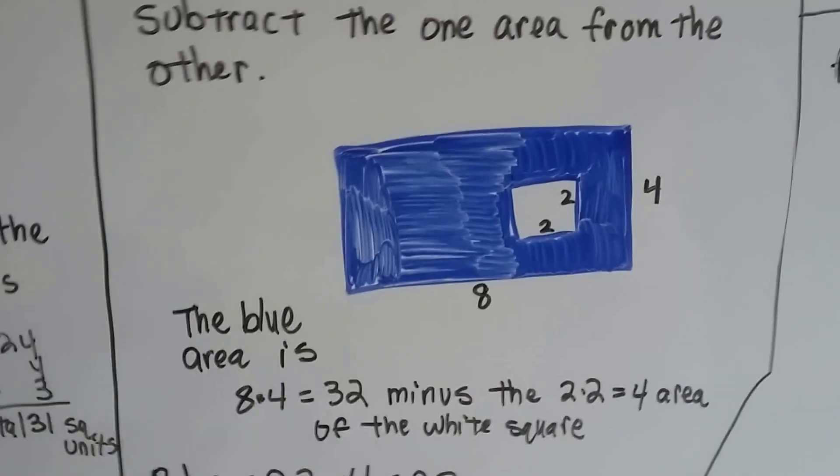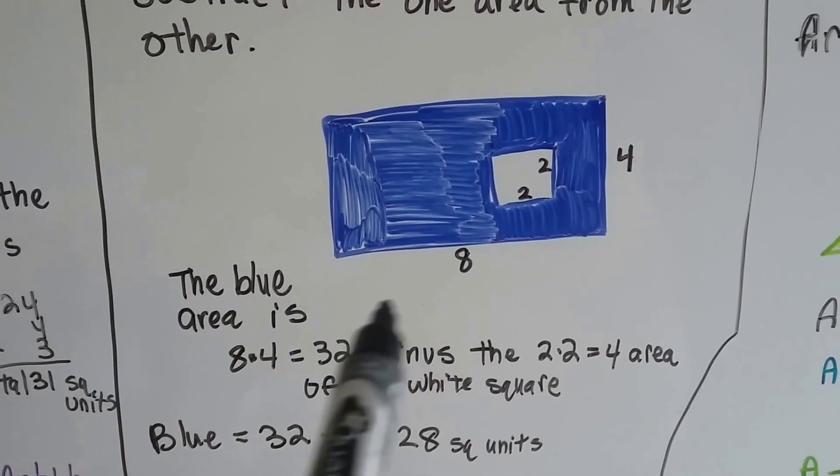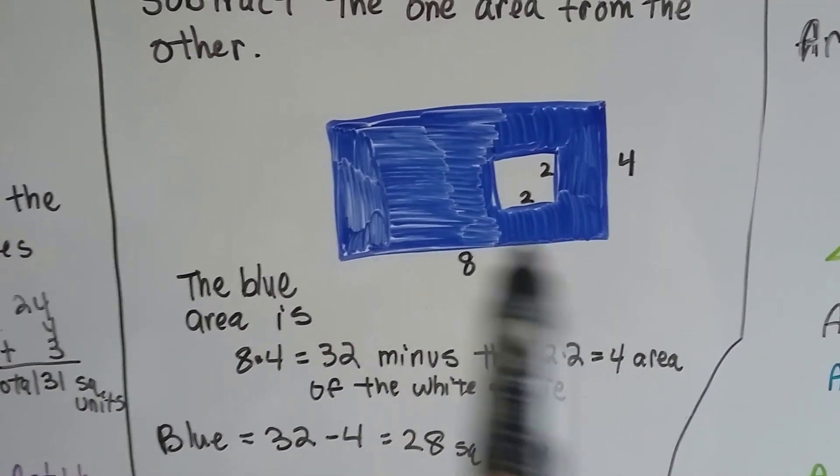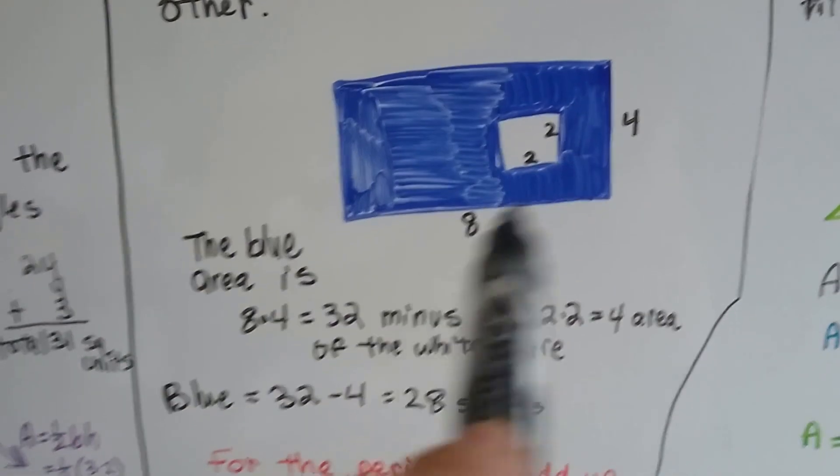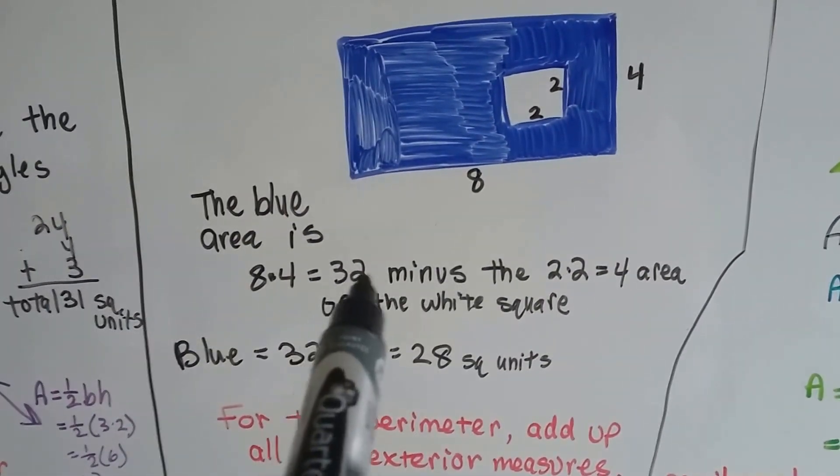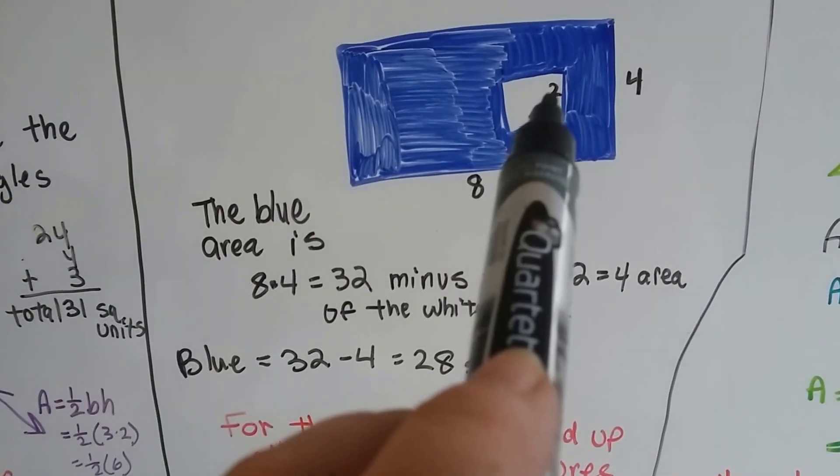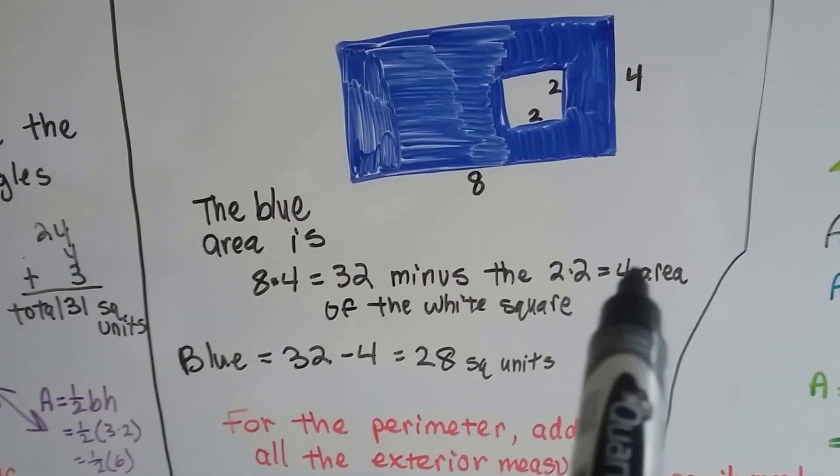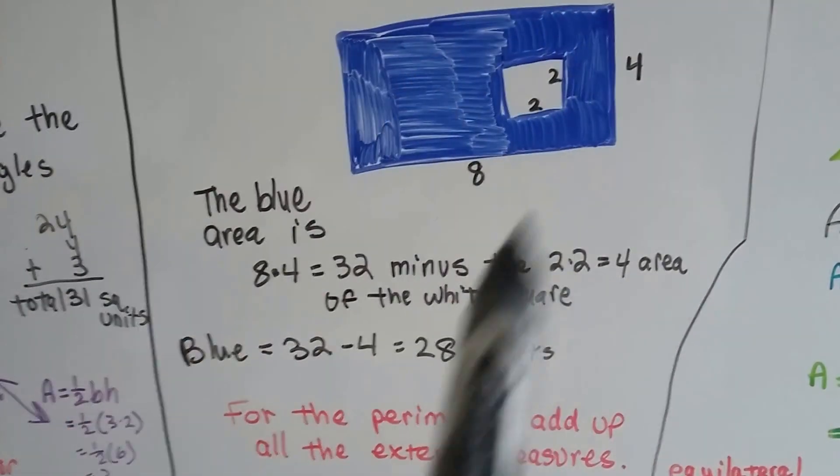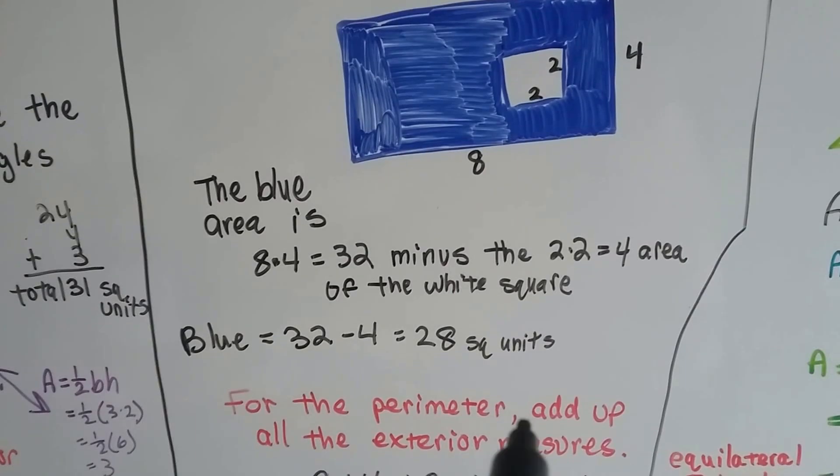So this blue rectangle has a little white square inside of it. We can see the blue rectangle is 4 feet wide and 8 feet long. So all we have to do is multiply the 8 times 4, we get 32, and subtract the 2 times 2 square that's inside of it, the 4. So we have 32 minus 4, so the blue shaded area is 28 square units.